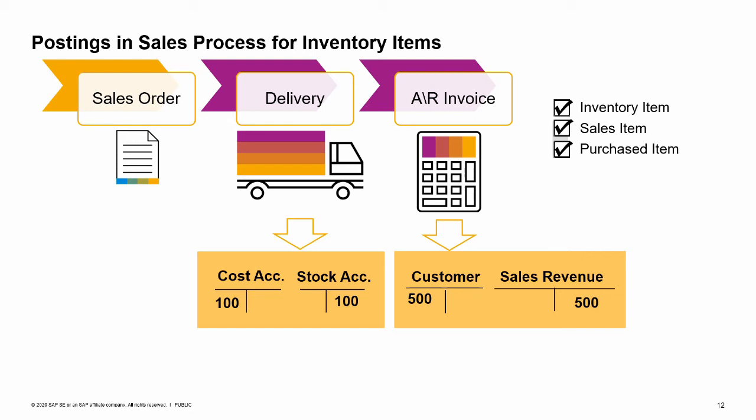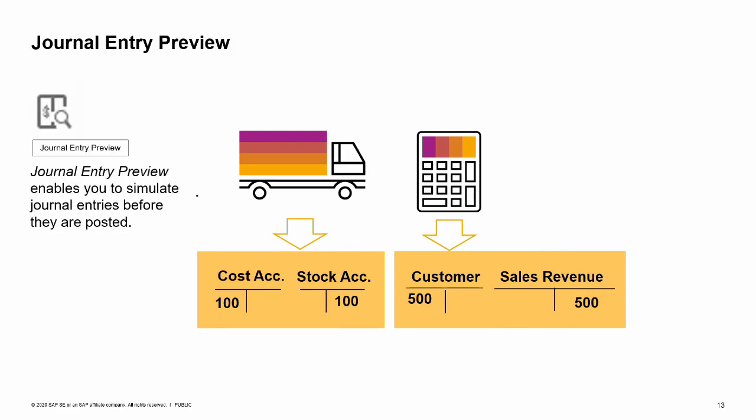There may be additional postings for tax or additional revenues and expenses. Once a journal entry is made, it cannot be changed, only reversed. Journal entry preview enables you to simulate journal entries before they actually happen in the database. This can be useful if you are creating an AR invoice with special circumstances and you would like to check the journal entry before posting the invoice. It is also useful for training new employees or for testing settings during an implementation. This function is available for all documents that create journal entry postings. You choose the journal entry preview icon to instantly view what would happen when you post the document. Simulation includes GL accounts and the cost center distribution.